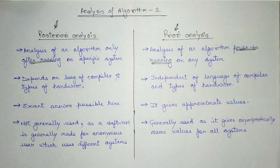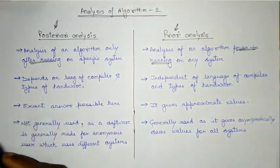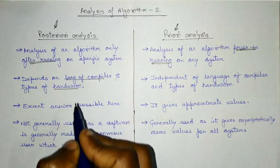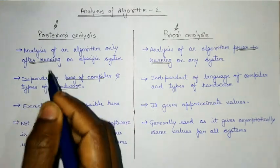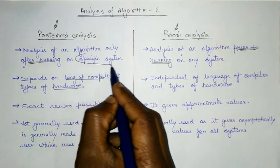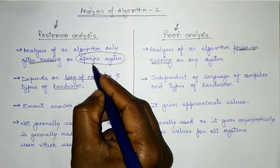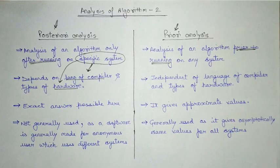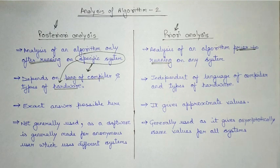The posterior analysis depends on the language of the compiler and hardware. This is because we are using it on a specific system, and for that particular system the language, compiler, and hardware might be different from another system. For example, I might be using a system with 8GB or 16GB RAM, while another user might be using a 4GB RAM system.